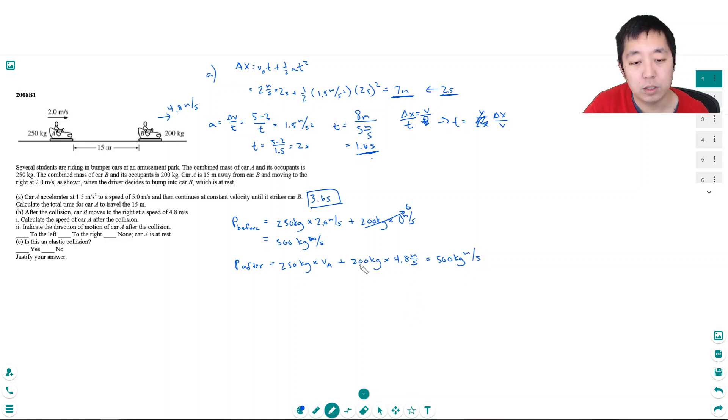Okay, so this times this, 4.8, that's 800, this is 960. So then I've got to subtract this over here. 250 v_A is equal to 1250 minus 960. What's that? It's 290.